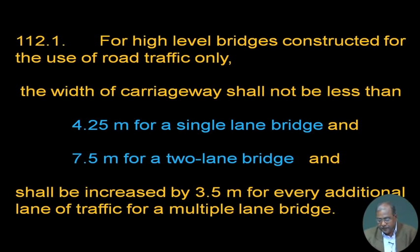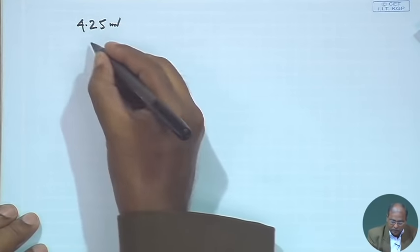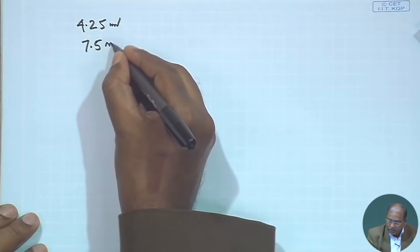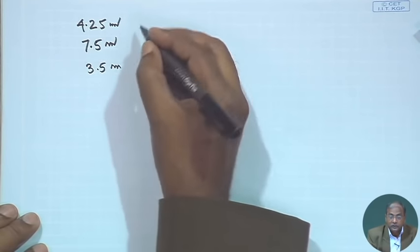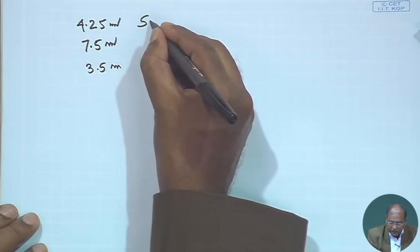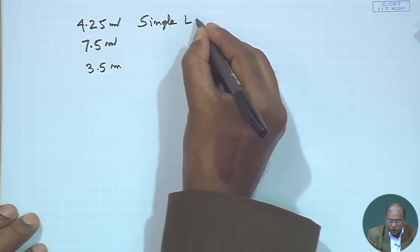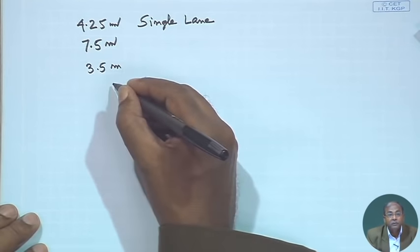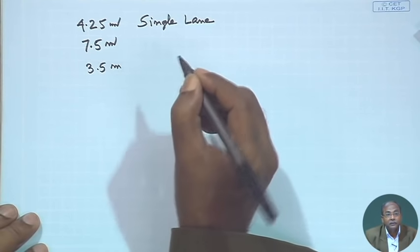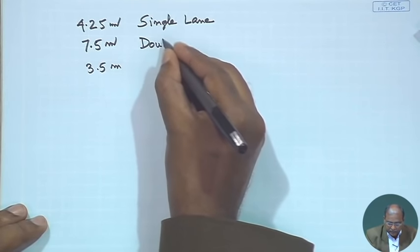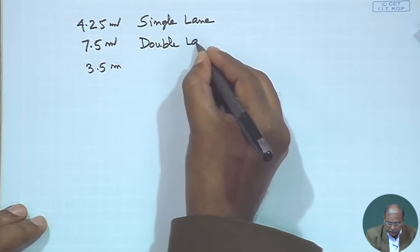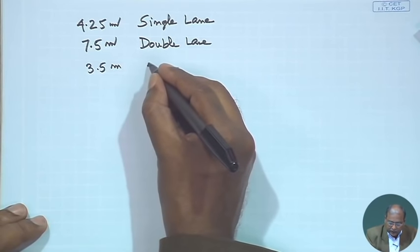The carriageway width shall be increased by 3.5 meters for every additional lane in a multi-lane bridge. So we have three key numbers: 4.25 meters for single lane, 7.5 meters for double lane, and 3.5 meters for each additional lane. For single lane, it is wise to give a little more because 3.5 may be just sufficient for one lane.